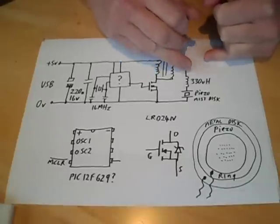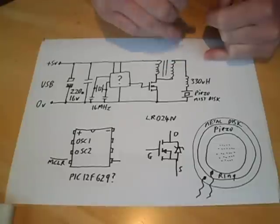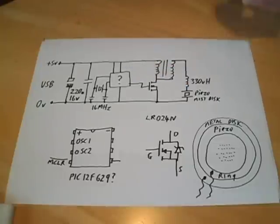After that it goes through another inductor, a series inductor. I'm guessing this is all just designed to peak the voltage as high as possible to get the maximum disc excursion, and then you get the piezoelectric misting disc.